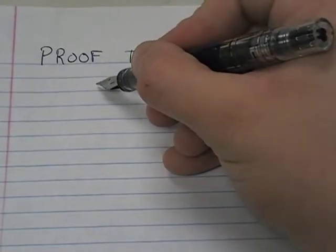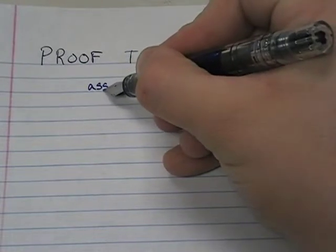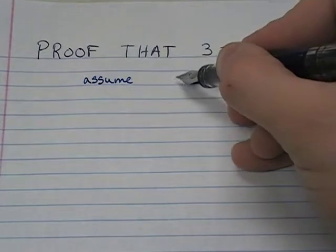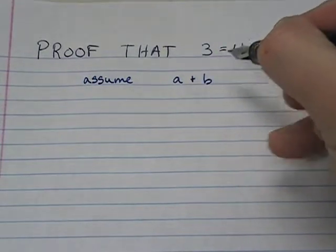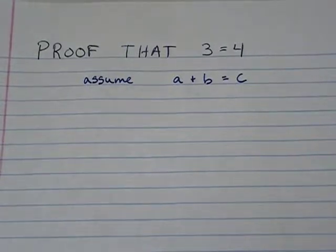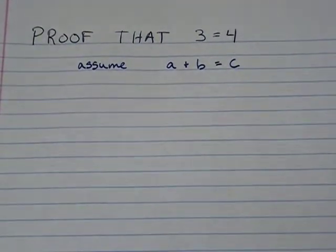So here's what we're going to assume. We're going to assume that we have a set of variables that A plus B equals C.